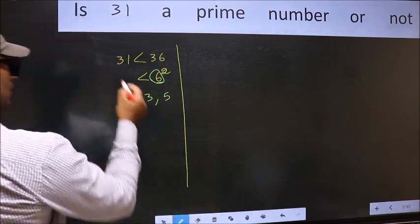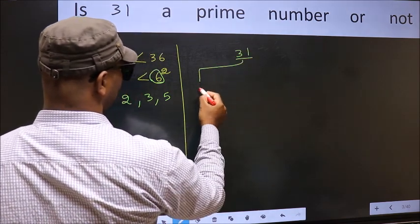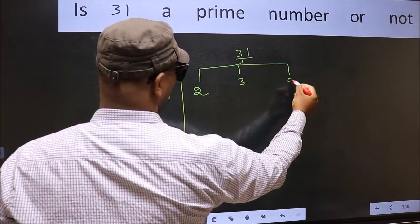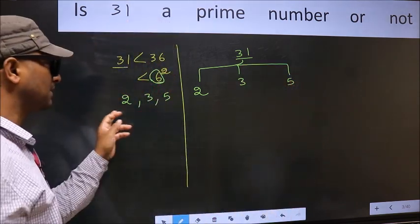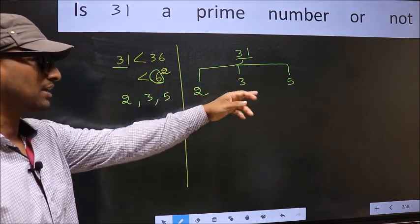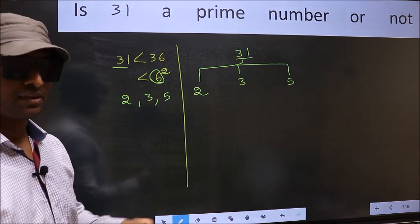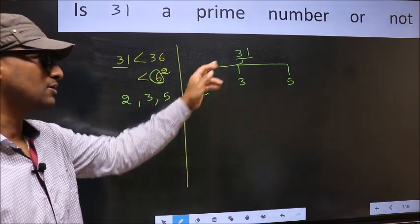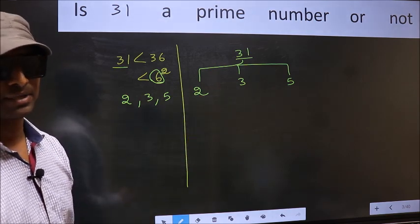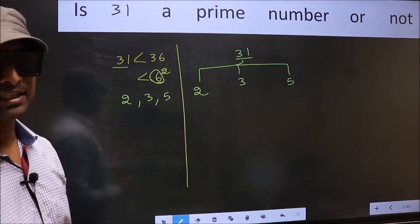Now for the given number, we should check divisibility by 2, 3, and 5. If 31 is divisible by any one of these numbers, we say it is not prime. If 31 is not divisible by any of these numbers, we say it is prime. Clear with the method? Let us check the divisibility.